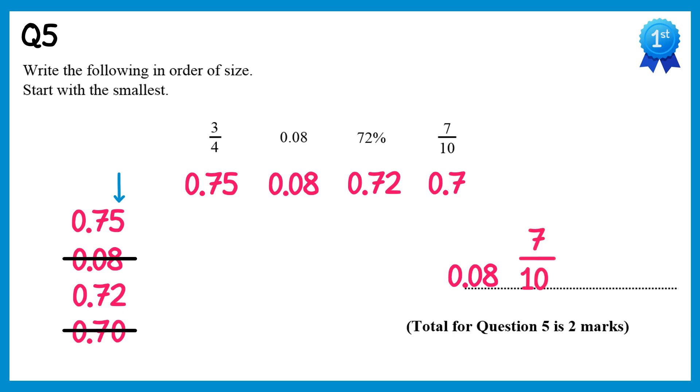The next smallest one is the one with a 2, so 0.72, which was 72% in the question, and cross that one out, and then the final one is 0.75, which is 3 quarters.